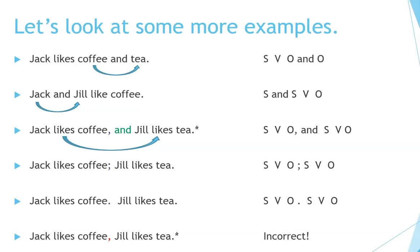Let's look at some more examples. Jack likes coffee and tea — coffee and tea are connected; they're things that Jack likes. The pattern is subject-verb, object and object. Jack and Jill like coffee — they're both connected; they both like coffee. The pattern is subject and subject-verb, object. Jack likes coffee, and Jill likes tea — notice the connecting word 'and' and the comma before 'and.' The pattern is subject-verb, object, comma, and subject-verb, object.